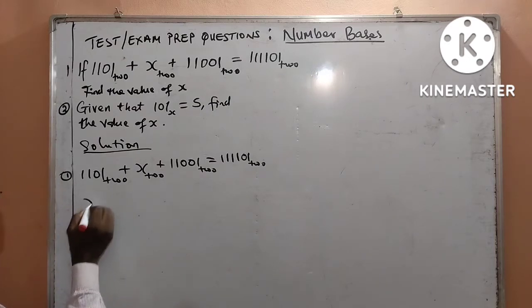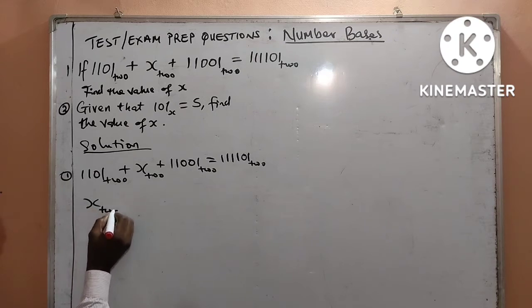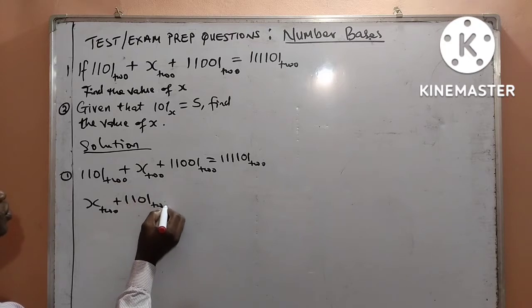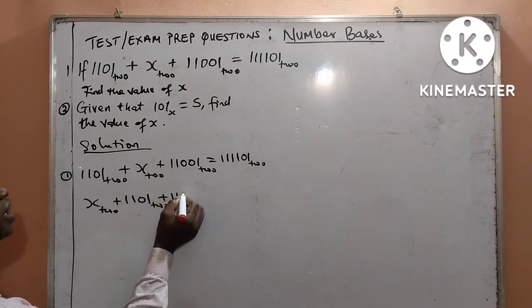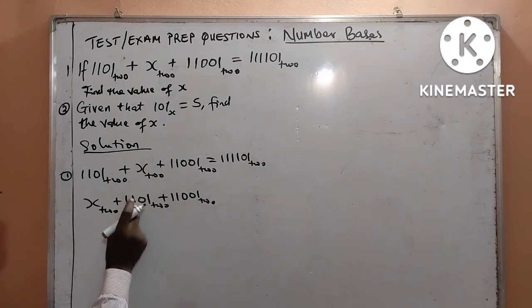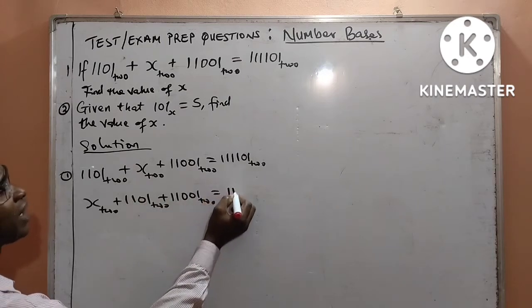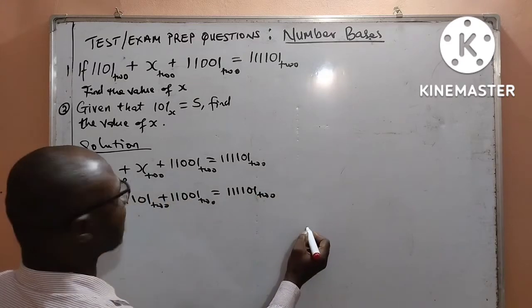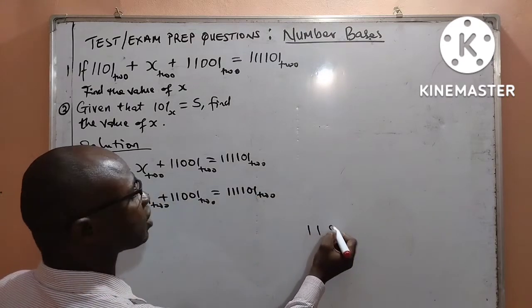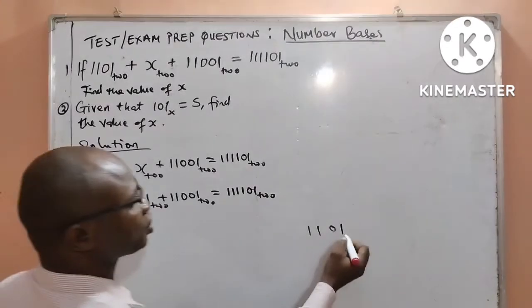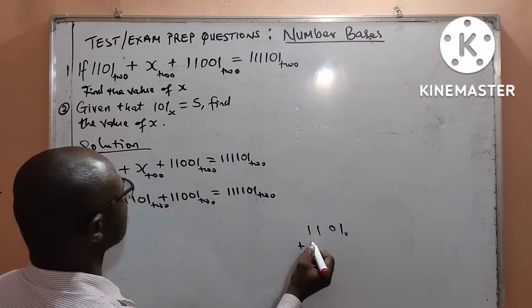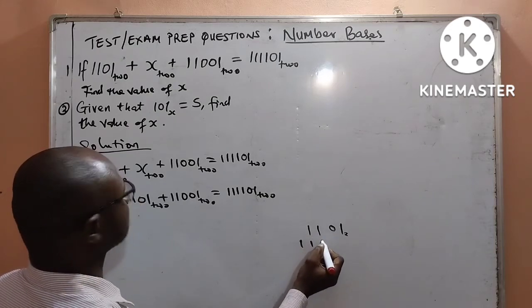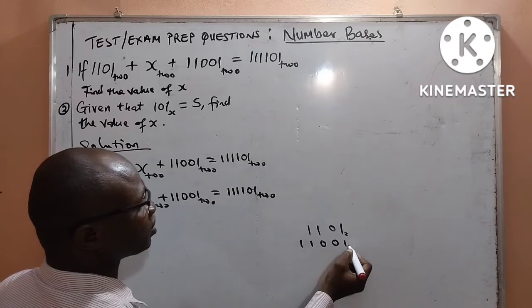Therefore, I will have x base 2, then plus 1101 base 2 plus again 11001 base 2. I will now add these 2. I will now add these 2 to get what it will give me. And after adding it, I am going to have 1101 base 2. Then plus 11001 base 2.